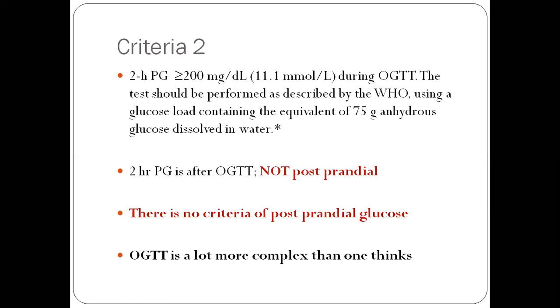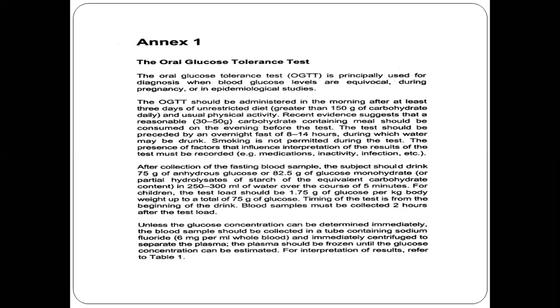But OGTT is a lot more complex than one thinks. These are the guidelines from WHO as to how OGTT is supposed to be done. 75 grams is not actual glucose, it is anhydrous glucose, which corresponds to 82.5 grams of glucose monohydrate. You have to put it in 300 mL of water and finish it in five minutes. You must be fasting for at least 8 to 14 hours and have had three days of unrestricted caloric intake.